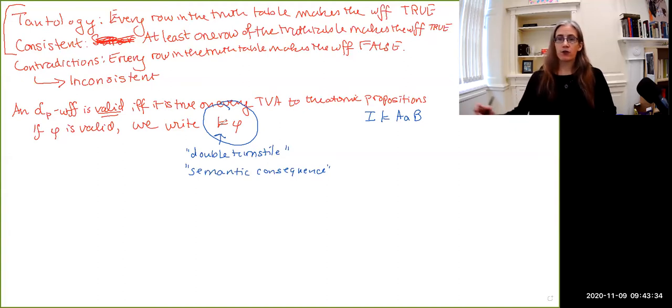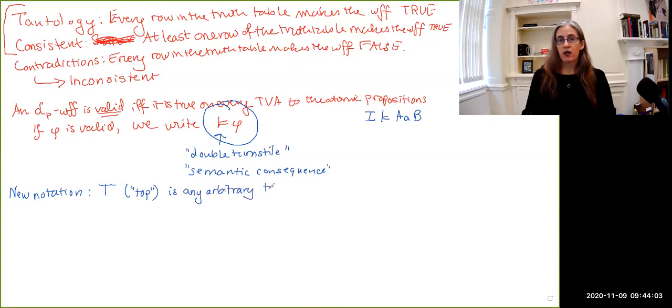Sometimes it's useful to be able to refer to just kind of arbitrary tautologies or arbitrary contradictions. So we will introduce some new notation for that as well. So new notation, we will put in this symbol, which looks like a T, but is pronounced top, is any arbitrary tautology. So it could be if P then P, it could be P or not P, it could be something much more complex. But if it doesn't matter, we just need to have some sentence that is a tautology, we can use this as kind of like a placeholder in our formulas.